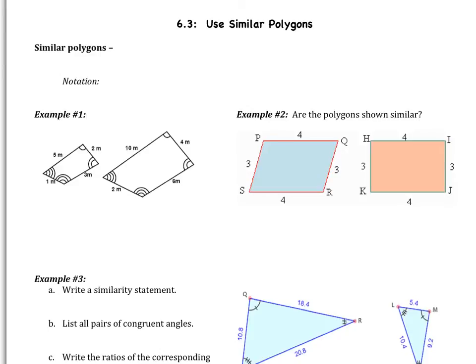Welcome to section 3 of chapter 6, which is 'Use Similar Polygons.' Chapter 6 is all about similarity, so this is the first section where we're actually jumping right into similarity. The first thing we should probably talk about is what does it mean for polygons to be similar?